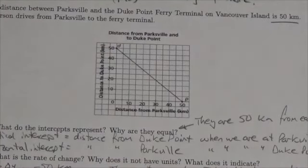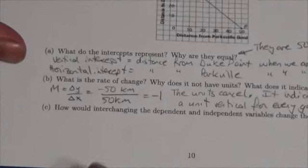Every time we get one kilometer closer to Duke Point, we're moving one kilometer further away from Parksville.